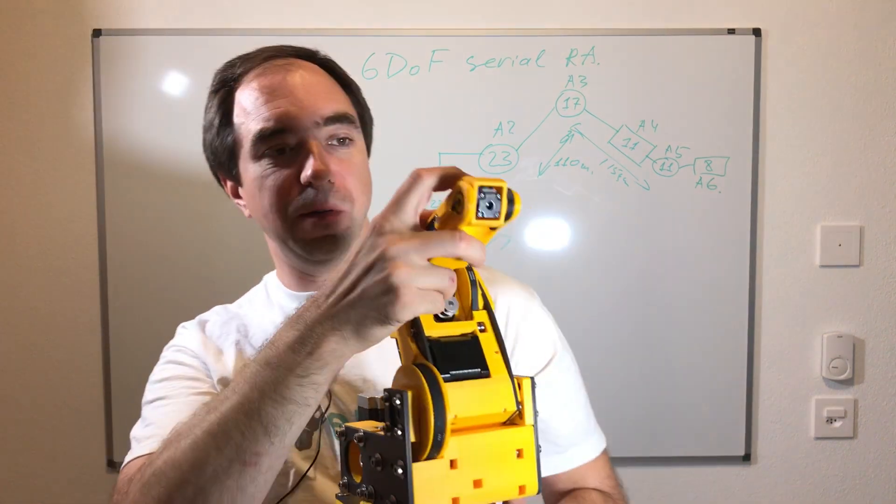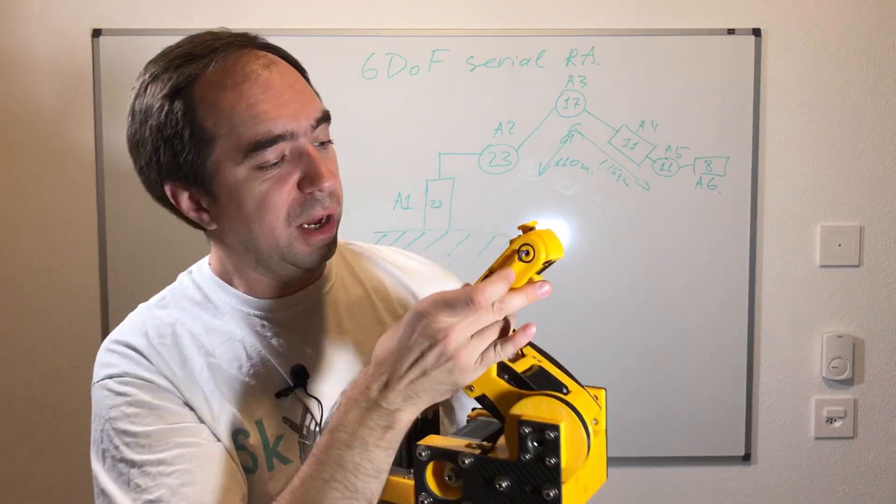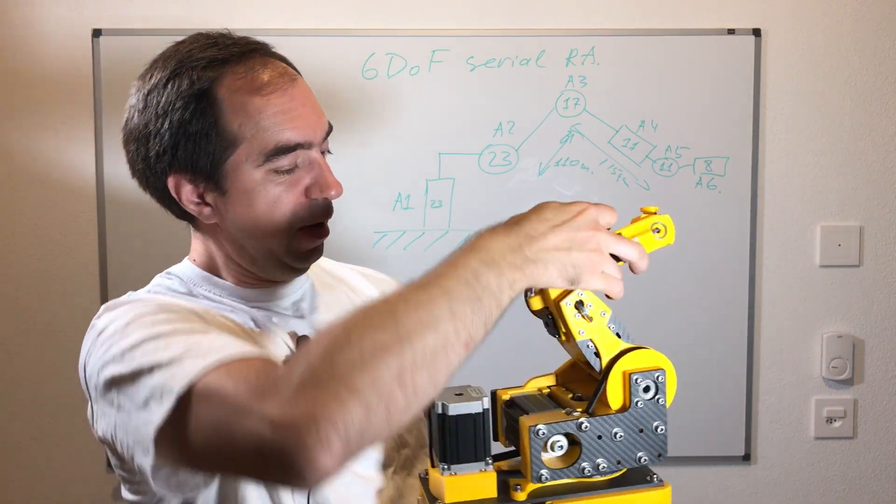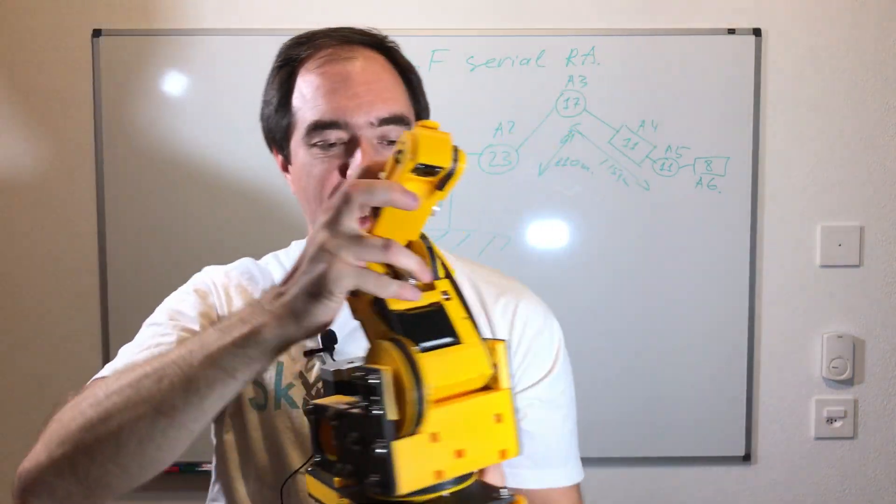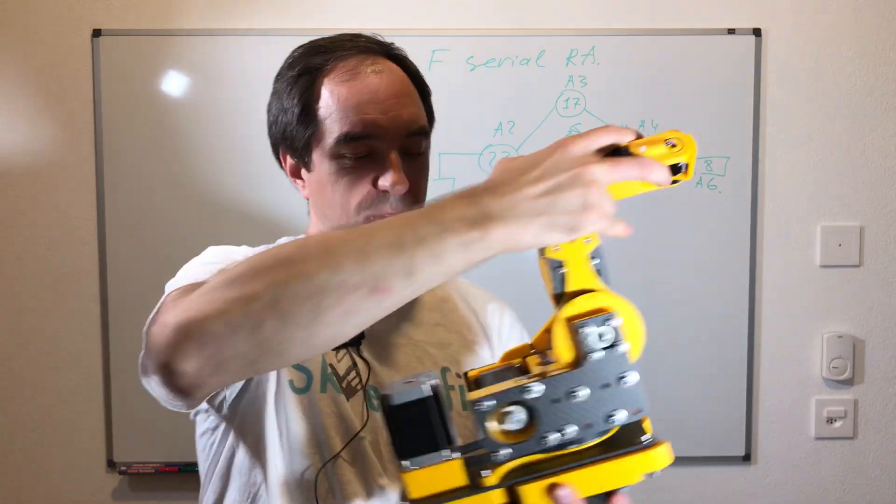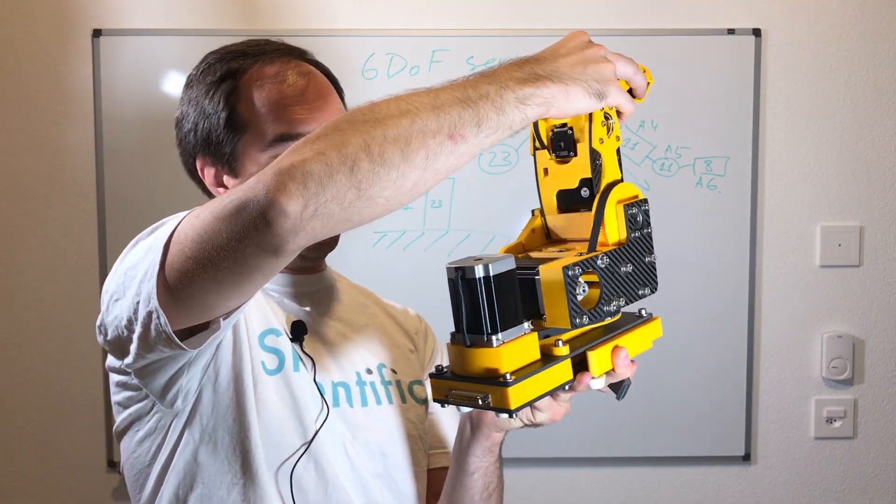So here we have the NEMA 8 motor. Here is NEMA 11. Here is NEMA 11 again, NEMA 17 for the axis 3, NEMA 23 for the axis 2, and NEMA 23 for the axis 1.